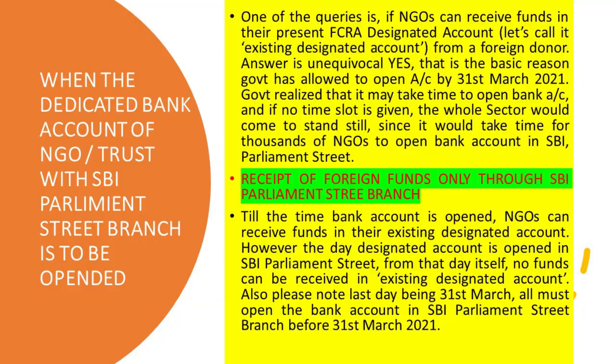A very frequently asked question is: when must the dedicated bank account of an NGO, trust, or Section 8 company at the SBI Parliament Street Branch be opened? One query is whether NGOs can receive funds in their present FCRA-designated account from a foreign donor. The answer is: unequivocally yes — you can receive funds up to 31st March 2021 from your existing bank account. After 31st March 2021, you must receive only through the designated SBI Parliament Street Branch, New Delhi. The government recognized it would take time for thousands of NGOs to open bank accounts at SBI Parliament Street.